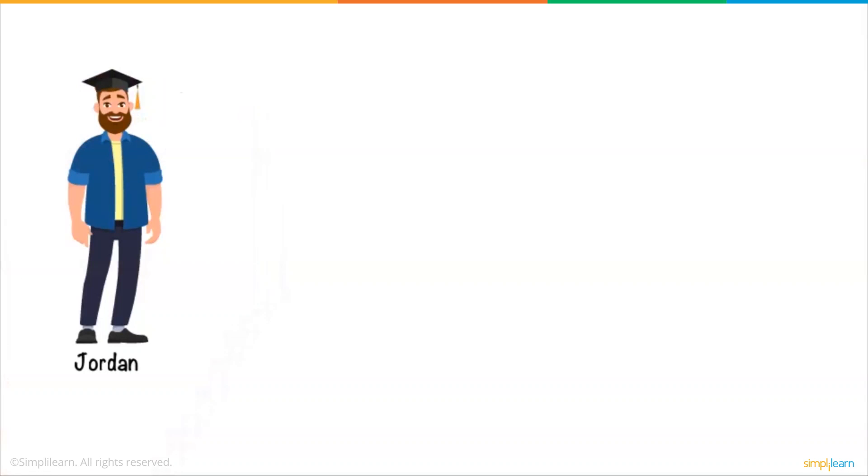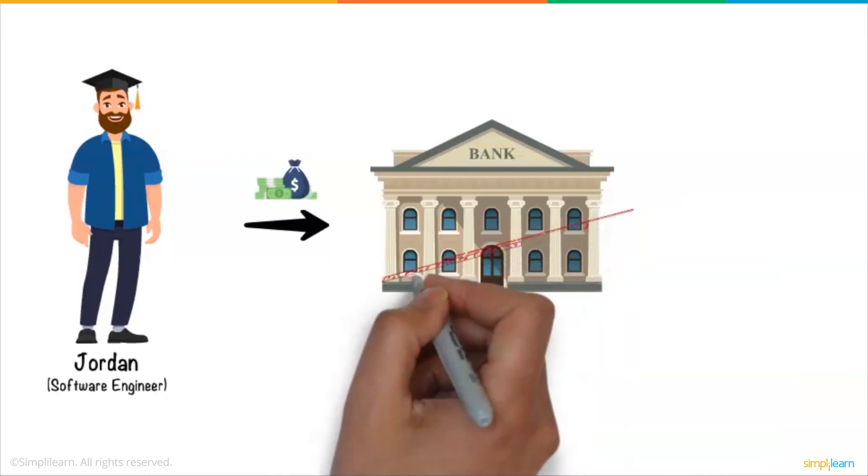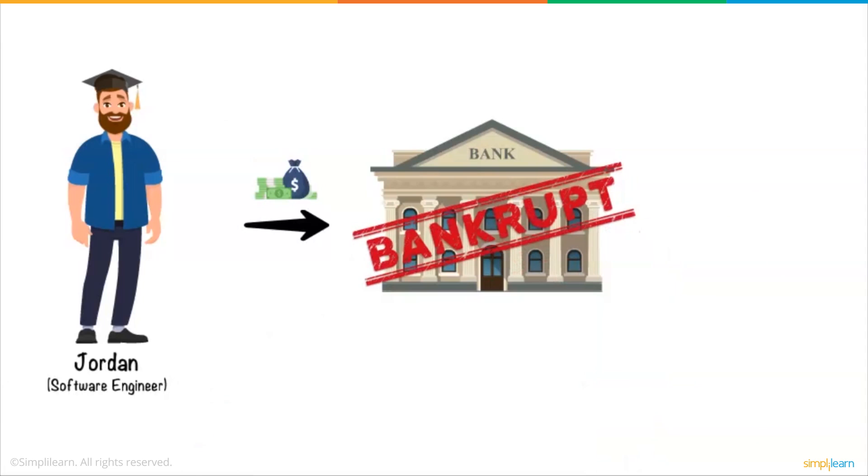Jordan, a fresh graduate, is working as a sophomore engineer at a big firm, saving money for higher studies. One day, he came to know that the bank where he was saving money got bankrupt, and all his money was now gone with the bank.